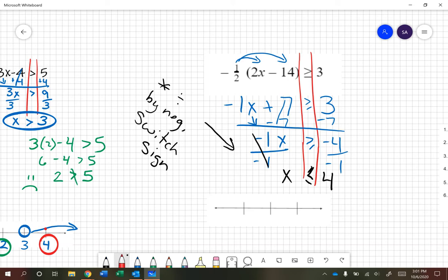So as I set up my graph, I have 4 and 5 and 3. And I have a closed dot, because it's less than or equal to. And this time my arrow is going this direction.